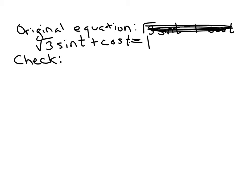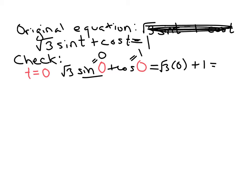So I've written the original equation out here. Our potential solutions were, the first one was 0. So you'd plug 0 into the original equation. √3 sin(0) + cos(0). And we want to verify whether that equals 1. Well, sine of 0 is 0. Cosine of 0 is 1. So that does equal 1. So t = 0 is a verified solution here.